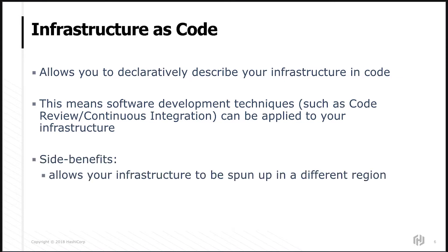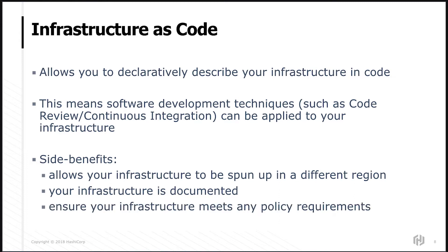There are a couple of side benefits too. First, it means your infrastructure can be spun up in a different region — if South Central US goes down, you can spin up somewhere else. It also means your infrastructure is documented, which is a really nice unexpected side effect, because the state of your infrastructure is in code, you can just read it, and it's always up to date. It also means you can ensure your infrastructure meets any policy requirements — so if you create modules, you can say you're only allowed to deploy in this region, or for these sizes, or whatever you want.